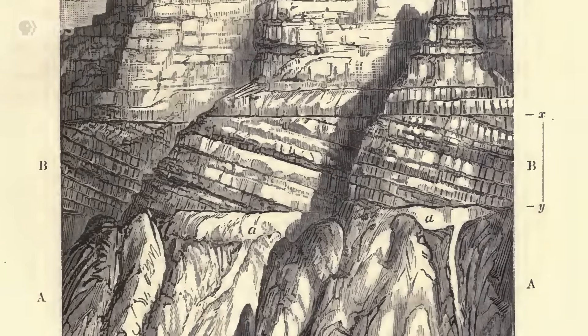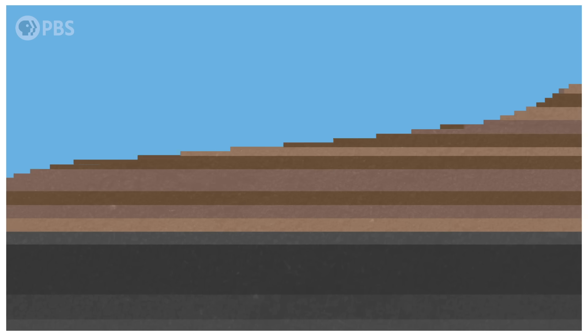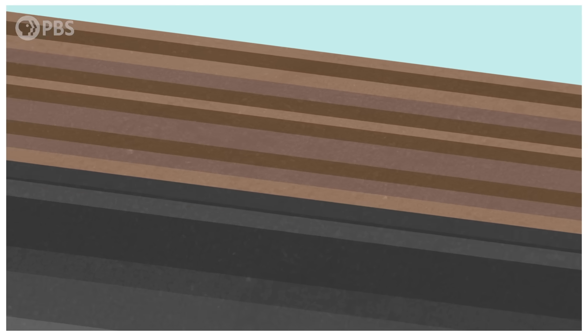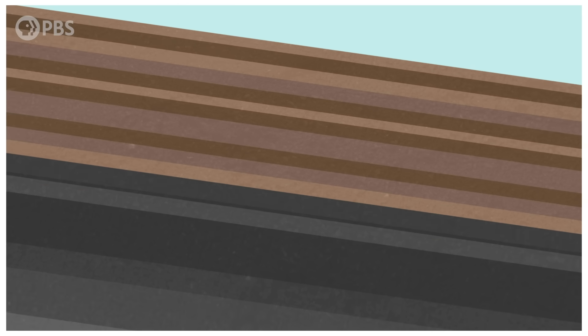Dutton knew these layers were made up of very old sediments. Originally, they had been laid down as horizontal beds, mostly in rivers or shallow seas. Then the sediments hardened over time, and geologic forces pushed some of the layers upward at an angle. As time passed, the tops of these tilted layers were sheared off by erosion. And later, new layers of sediment, which stayed more or less horizontal, were deposited right on top of them.